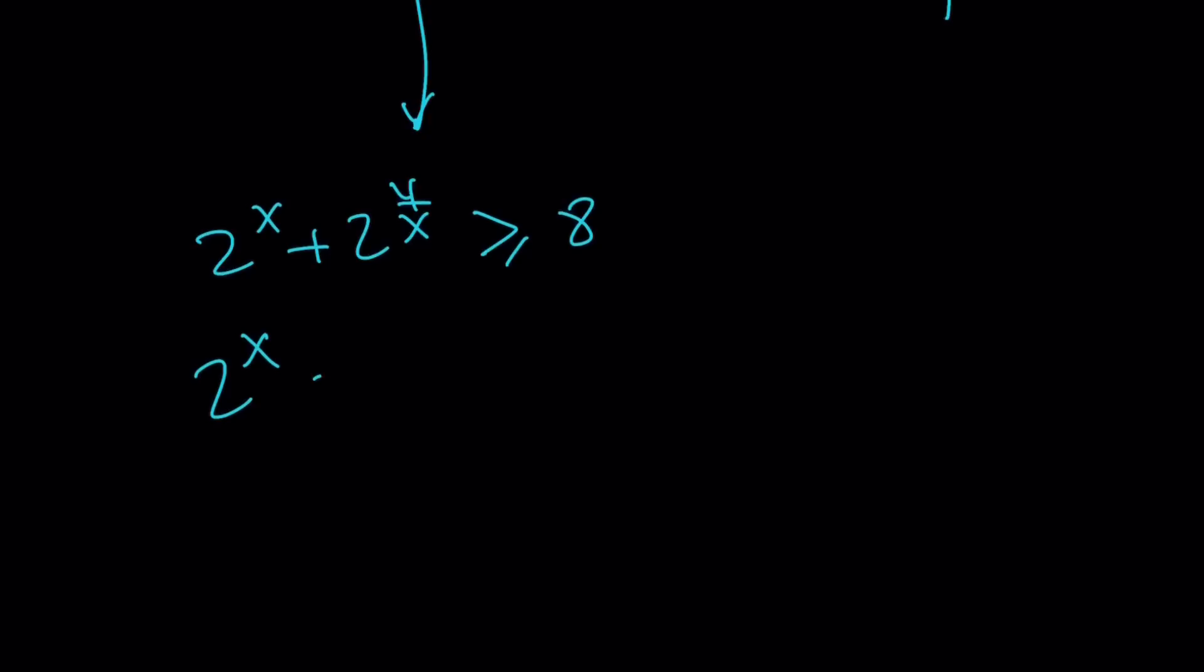So this means 2 to the x equals 2 to the power of 4 over x. From here, x equals 4 over x. And then by cross multiplication, you get x squared equals 4. Which gives you two solutions. x equals 2 and x equals negative 2.